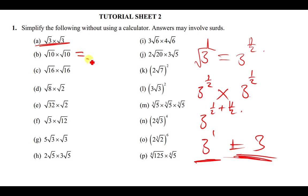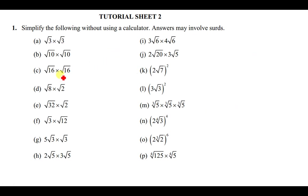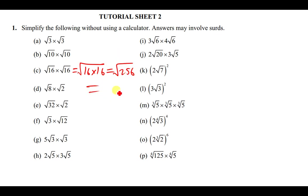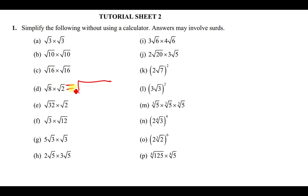Similarly, √10 × √10 = √100 = 10. For √16 × √16 = √256 = 16. Then √8 × √2 = √(8×2) = √16 = 4.